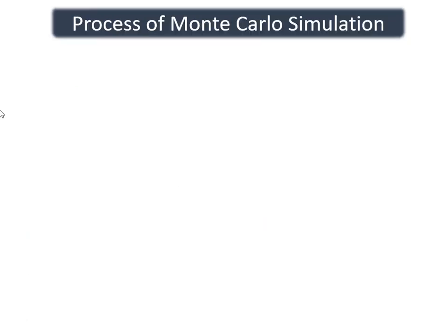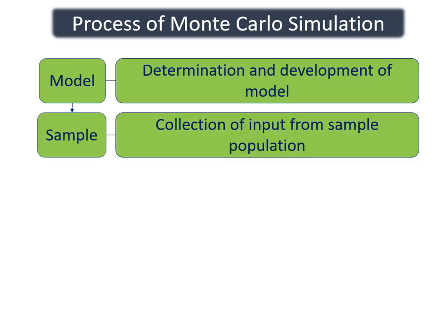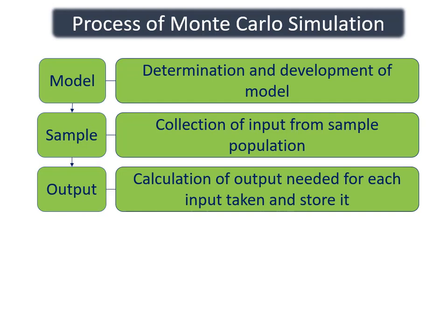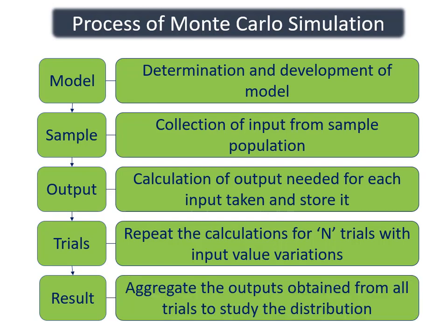The general process followed while conducting a Monte Carlo simulation consists of five steps. First, a model is determined and developed by identifying the inputs and outputs. In the second step, the sample is collected for the inputs from the sample population of the variables. When the inputs are determined, the outputs are calculated by conducting N trials, varying the inputs, and each value of the obtained output is stored. All the stored outputs are aggregated and a final result is obtained. Finally, analysis is done by obtaining the certainty and distribution of the output parameters, which becomes the estimate of the scenario.